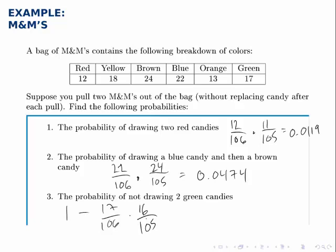So, we multiply these two fractions together, subtract them from one, and what we get is about 0.9756, so there's about a 97% chance that we don't draw two green candies.